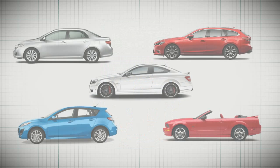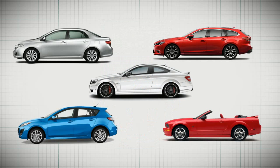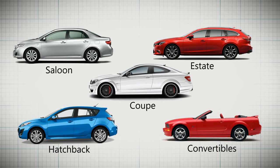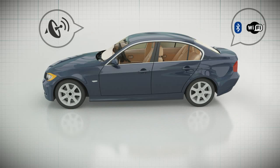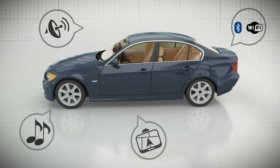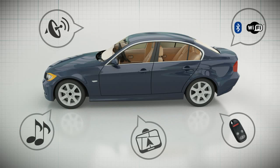Cars come in various shapes and sizes like saloon, estate, coupe, hatchback and convertibles. There are electronic communications devices which can be used in the car for different purposes. Here we can see some of them.